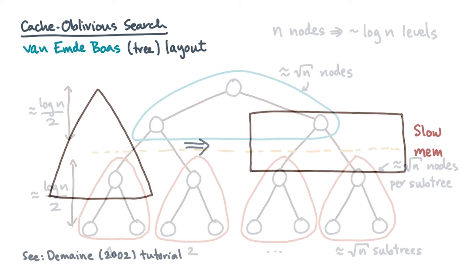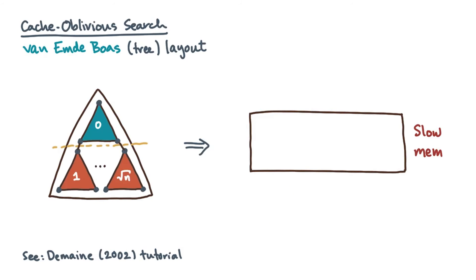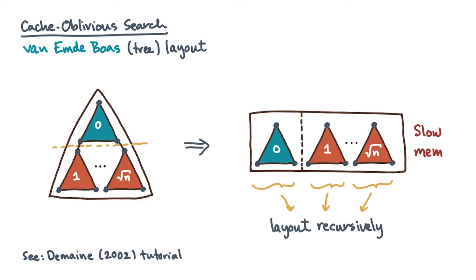Here's the Van Emde Boas layout idea. You have a binary search tree that you'd like to lay out linearly in slow memory. After partitioning the levels, lay out all of the upper subtree elements together, and then concatenate them with the lower subtree elements. And when I say lay out the elements together, I mean recursively apply the Van Emde Boas layout to each subtree.